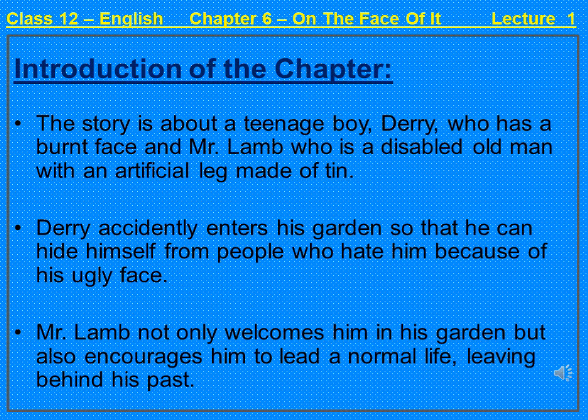Both characters of the play are disabled. Derry has a burnt face — one side of his face is burnt due to acid. Mr. Lamb is an old man with an artificial leg made of tin, because he got his one leg blown off in some war. Derry accidentally enters Mr. Lamb's garden so that he can hide himself from people who hate him because of his ugly face.